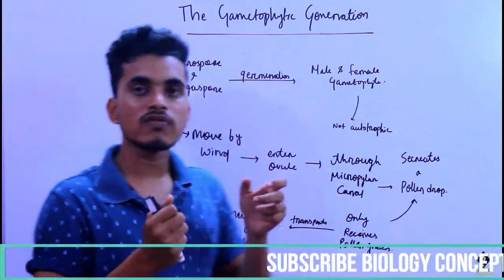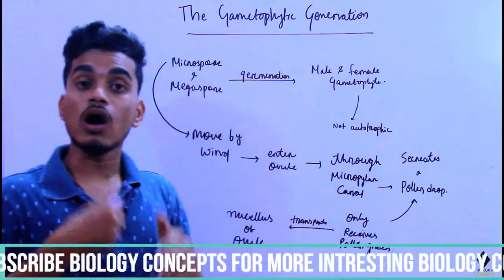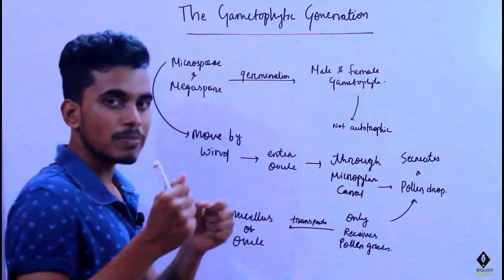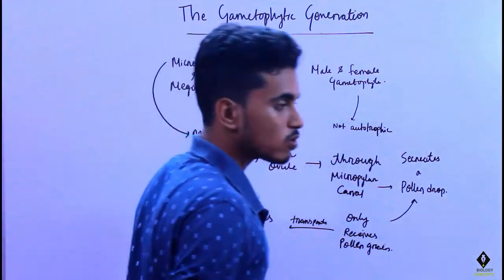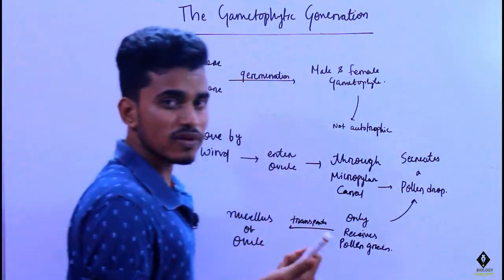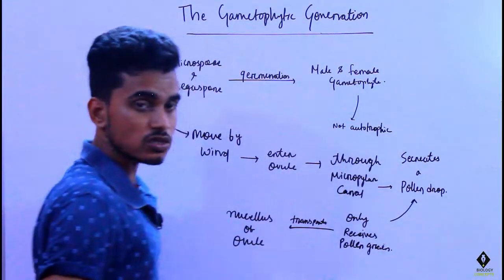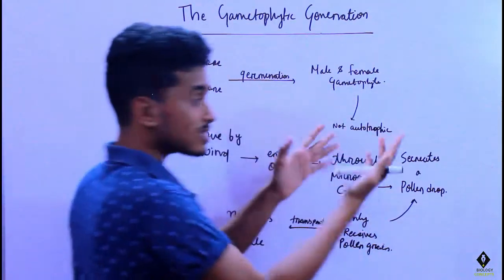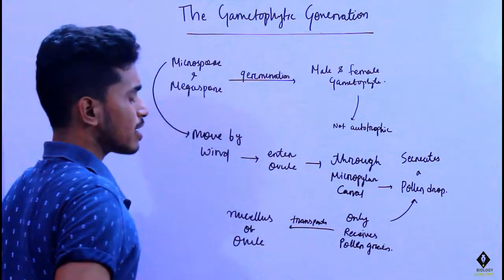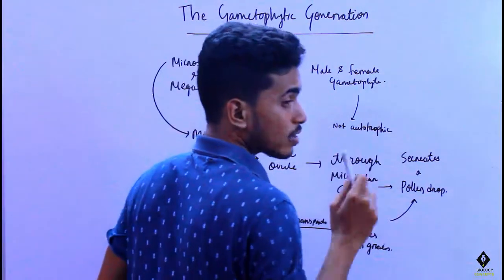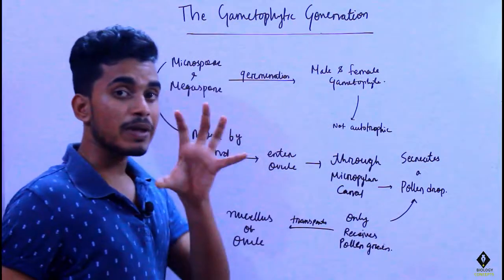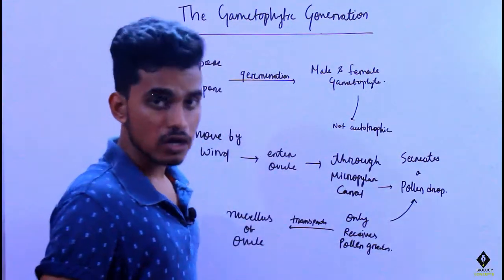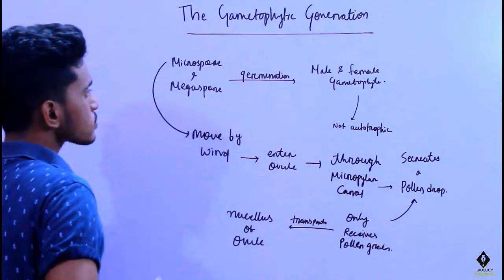There is a fusion between the pollen grains and archegonia. Before discussing fertilization, we need to understand some basics. The male and female gametophyte arise from the microspore and megaspore, and they are not autotrophic — they depend on the existing sporophyte for food and nutrition.